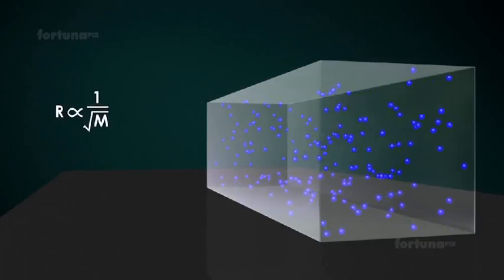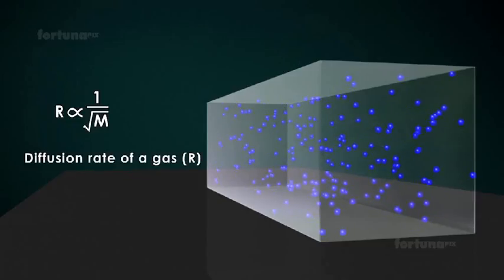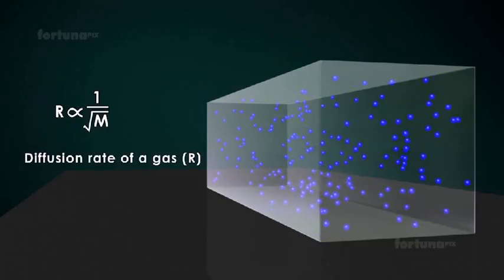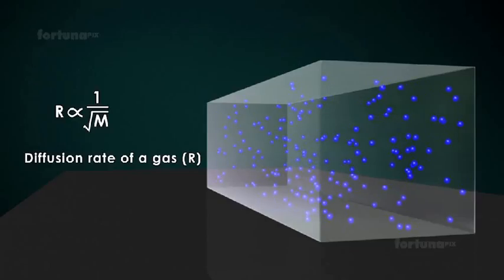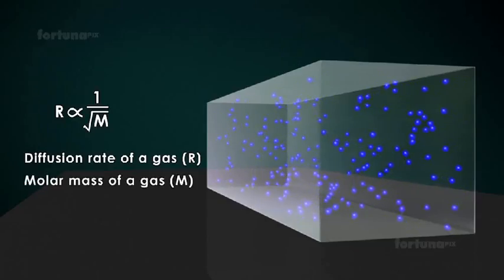This law can be mathematically represented as diffusion rate of a gas R is inversely proportional to the square root of its molar mass, M.